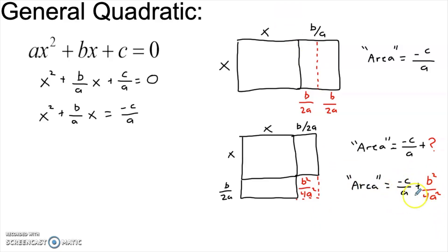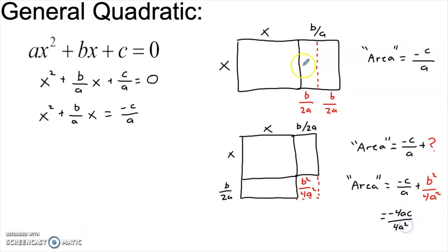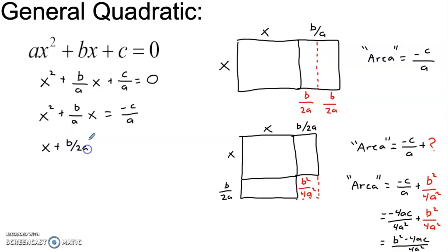Now that we've gotten our rectangle to be as close to a square as possible, we're simply going to fill in the missing piece and complete the square. If we multiply B over 2A times B over 2A, we get B squared over 4A squared. So let's go ahead and get a common denominator and simplify this area a little bit. If I want to have a 4A squared in the denominator here, I would need to multiply by 4A, which means I need to multiply by 4A in the numerator as well. So getting a common denominator there, we get negative 4AC over 4A squared. Now we can add these two fractions and we get a total area of B squared minus 4AC over 4A squared.